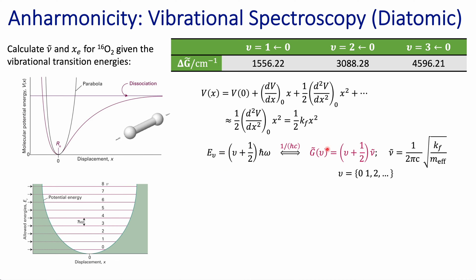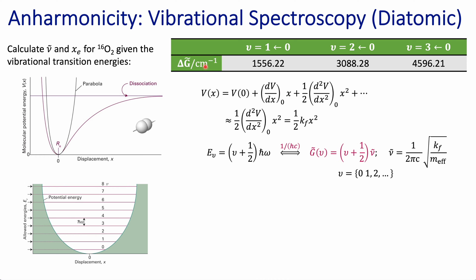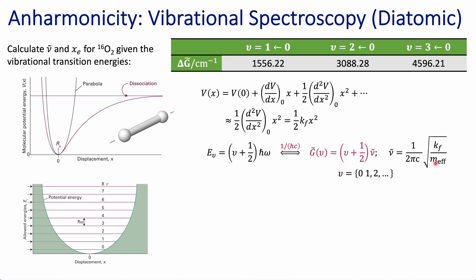Now, if we wanted to get this energy in terms of vibrational terms, we use the factor h times c, h being Planck's constant and c the speed of light. So we take the energy divided by this and we get the vibrational term. The tilde indicates that this term is in units of wave numbers, most commonly centimeters to the minus one. This nu-tilde, the vibrational transition wave number, is given in terms of the force constant and the effective mass of your molecule.